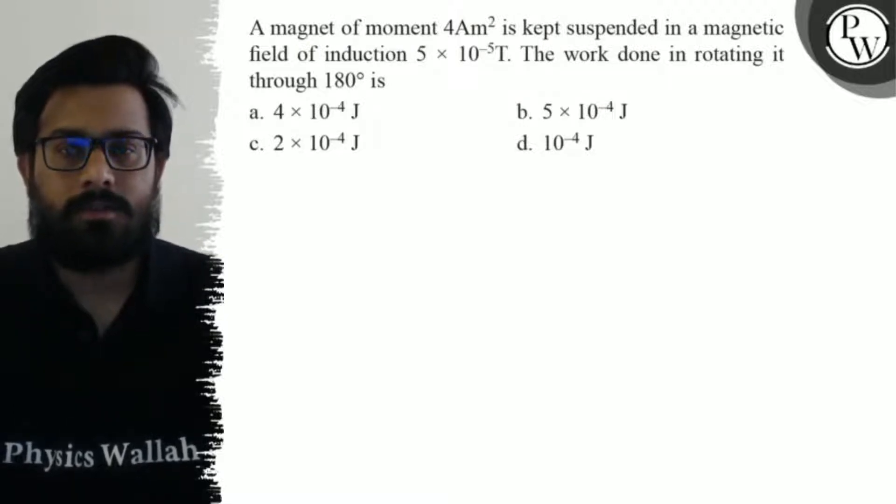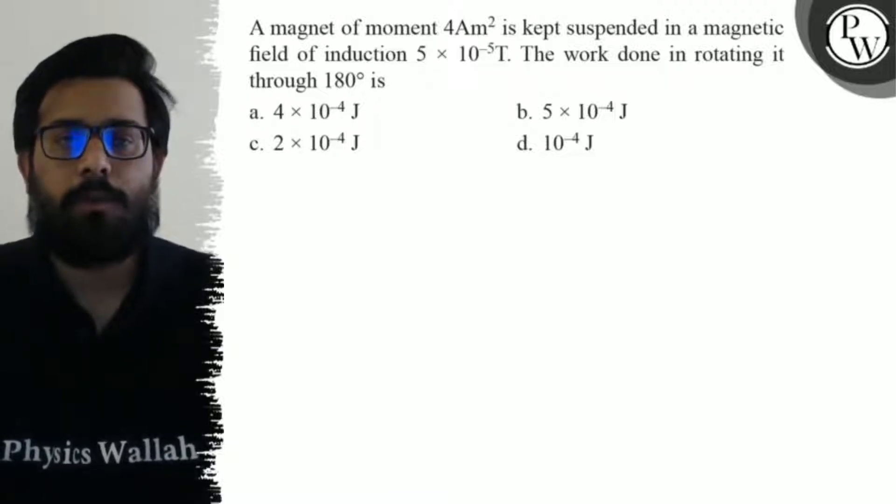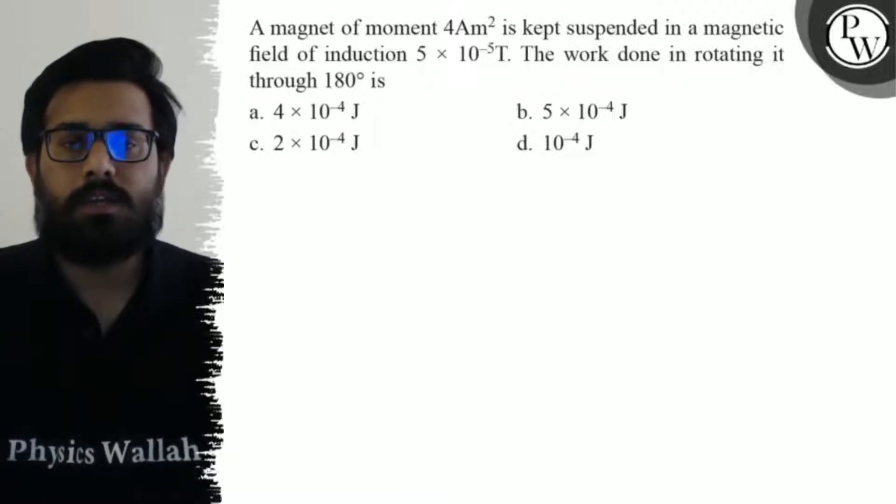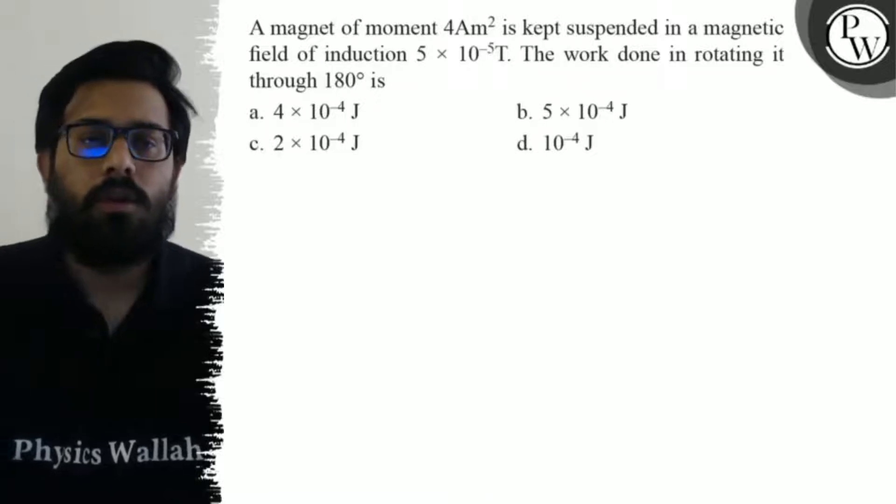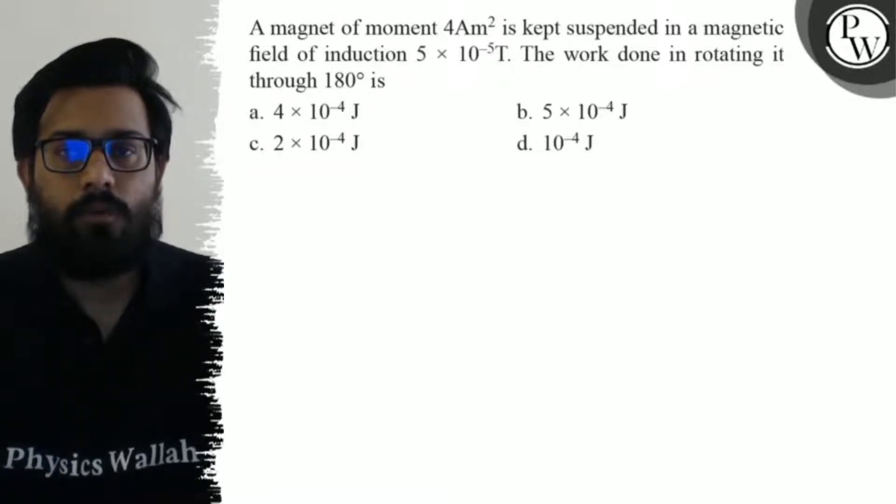The first option is 4 × 10⁻⁴ joule, second option is 5 × 10⁻⁴ joule, third option is 2 × 10⁻⁴ joule, and the fourth option is 10⁻⁴ joule. So here we have to find out the work done.